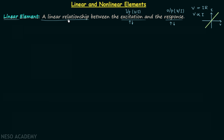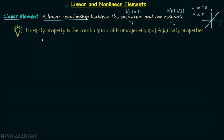The relationship between the excitation and the response of a linear element follows the law of homogeneity and the law of additivity. Therefore, we can say that the linearity property is the combination of homogeneity and additivity properties.